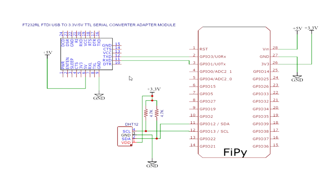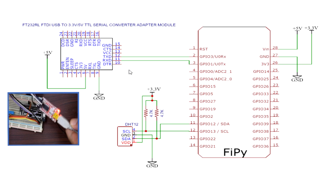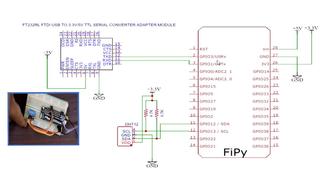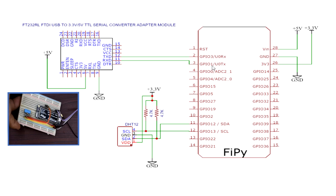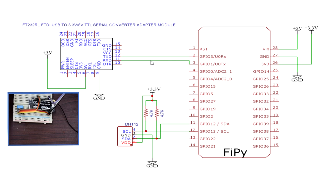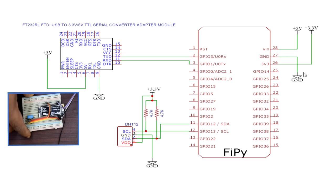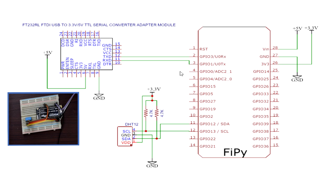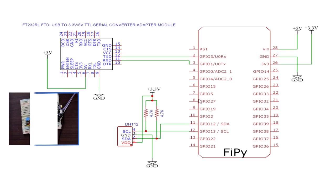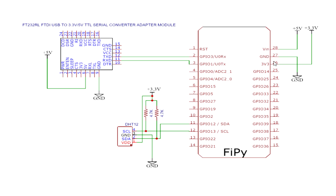We also need a USB to UART converter as the FiPy board doesn't feature any onboard USB to UART converter. To access the REPL console and upload scripts to it, we need some connection between our PC and the FiPy module, so we are using a USB to UART module. You can also use Telnet or FTP for file transfers. The TX goes to RX of the module and the RX of the converter goes to the TX of the FiPy board. Connect the 5V output of the USB to UART converter to power the FiPy board — don't use the 3.3V output, as the minimum voltage required for FiPy is more than 3.5V. The ground pin goes to the ground pin of the module.